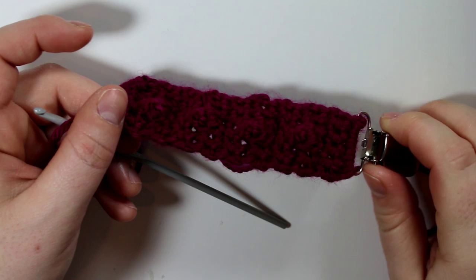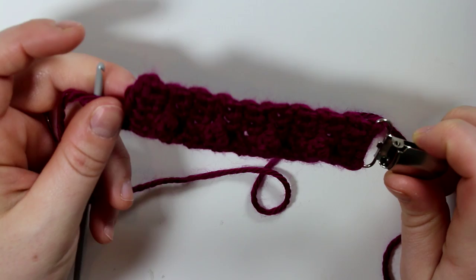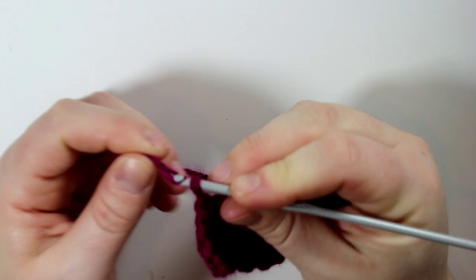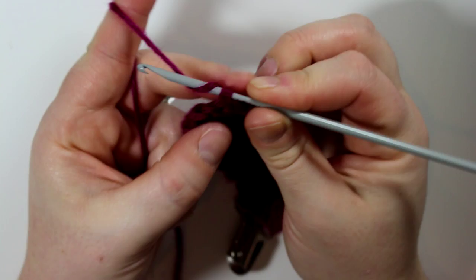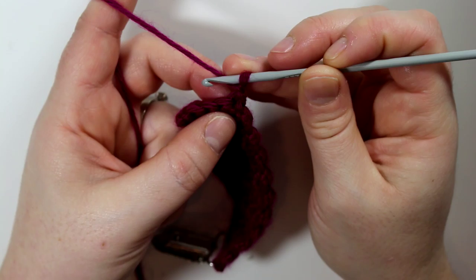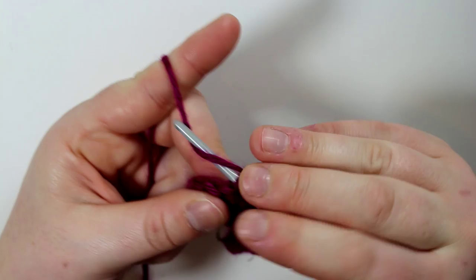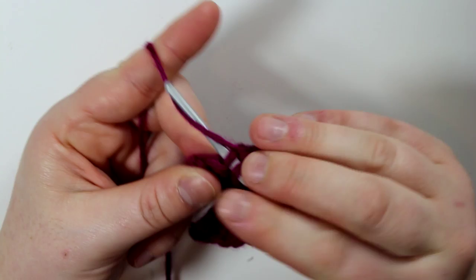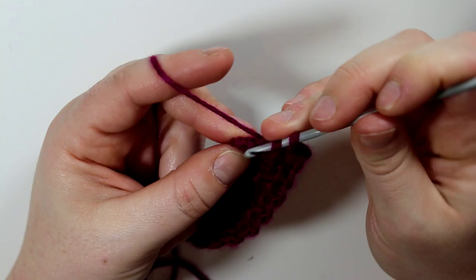Now I'm going to start the decrease. What you're going to do is you're going to chain one and then single crochet two together. To do that you're going to put your hook into the stitch, grab some yarn, then go into the next stitch, grab some yarn, and then pull through three loops. Then we do one single crochet, and then we're going to single crochet again two together, chain one and then turn your work.